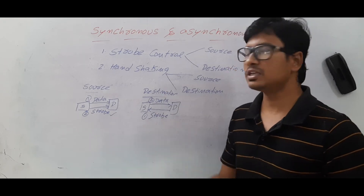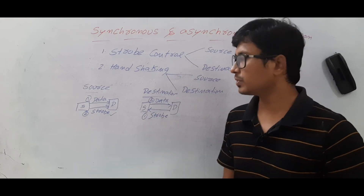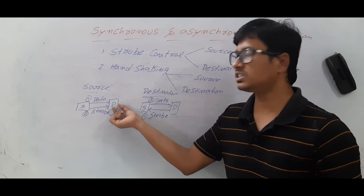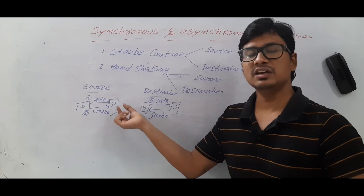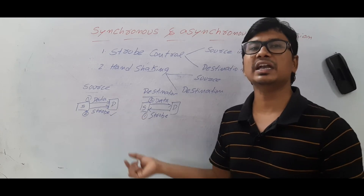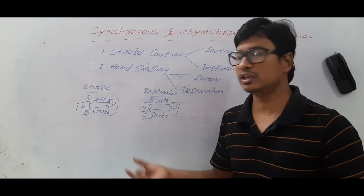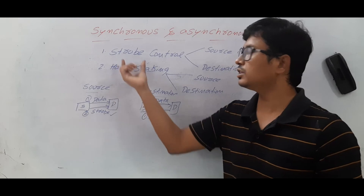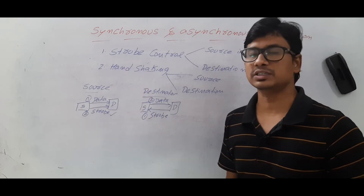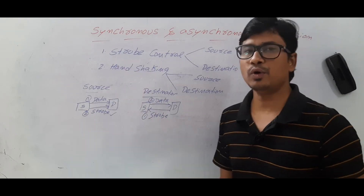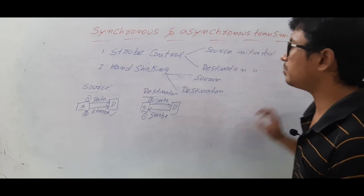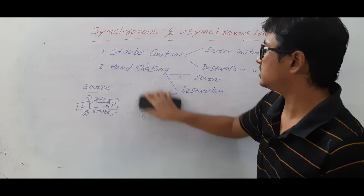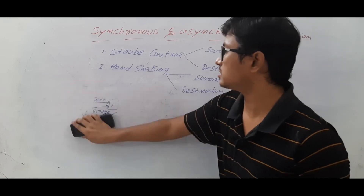What is the problem with strobe control signals? The source does not know whether the destination has received the data or not. There is no acknowledgement system in the strobe control signal. To avoid that problem, we have the handshaking mechanism.